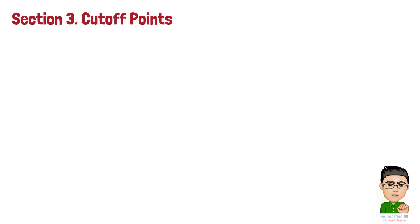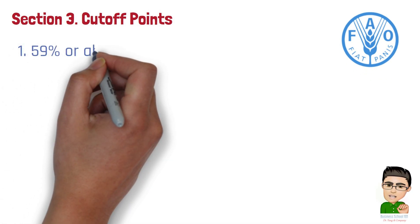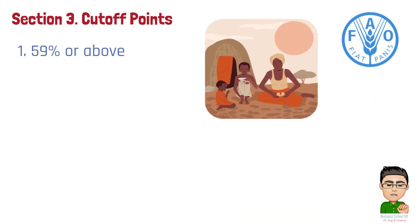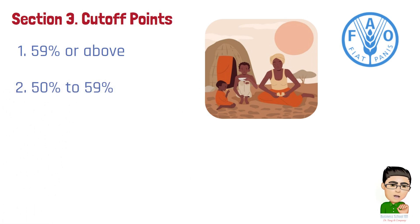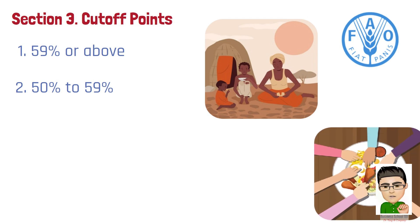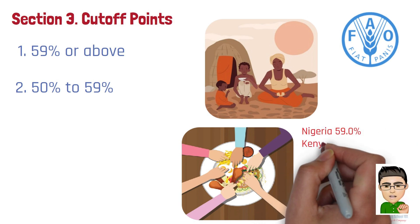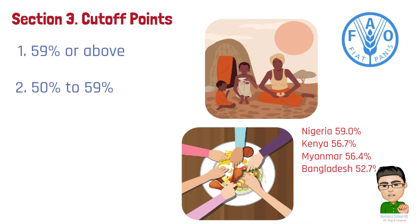Section 3: Cut-off Points. The cut-off points of the Engel Coefficient vary globally and have been established by different organizations. According to the United Nations Food and Agriculture Organization, countries are categorized into five groups. Group 1: 59% or above — indicative of absolute poverty, where households spend the majority of their income on food. Very few countries are in this group today. Group 2: 50% to 59% — households are not in immediate danger of hunger, but a significant portion of their budget goes to food. Countries include Nigeria 59%, Kenya 56.7%, Myanmar 56.4%, and Bangladesh 52.7%.